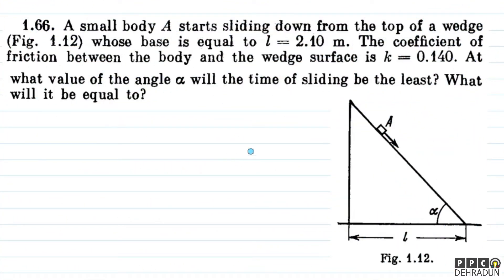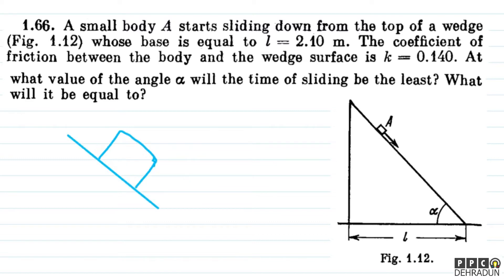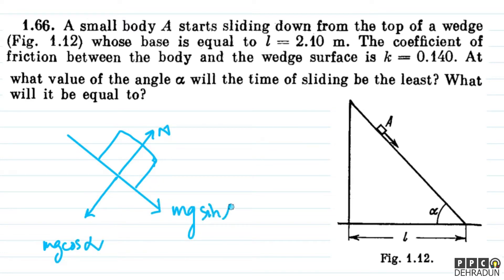So, as given in the question, the body is sliding down. The angle alpha is a variable, and we need to find it such that the time of sliding is minimum. For block A, the free body diagram shows forces on top of the wedge: the normal reaction, the component Mg cos alpha perpendicular to the incline, Mg sin alpha down the incline, and kinetic friction f acting up the incline.